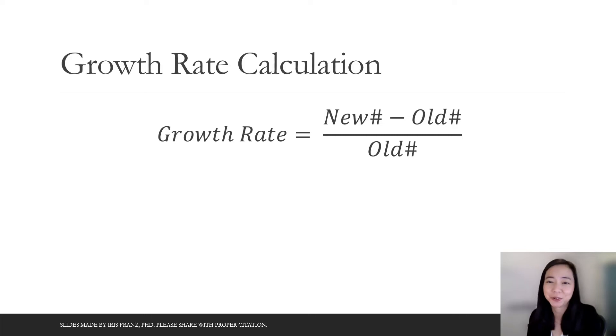So here is how we calculate growth rate. We have the new number minus old number and divide the housing by the old number. Then that will be the growth rate.